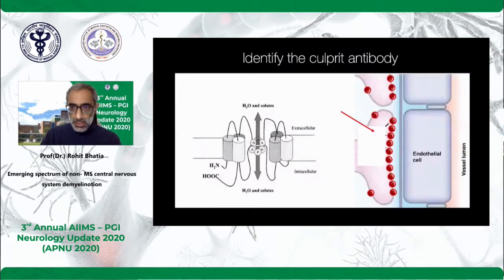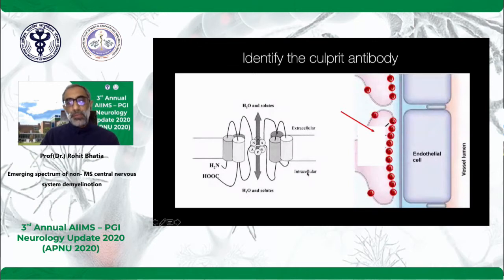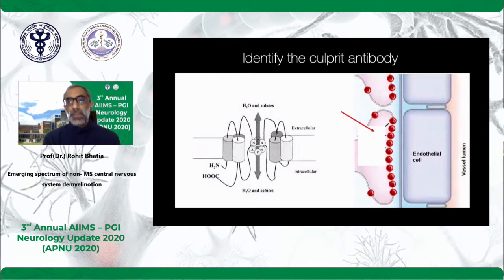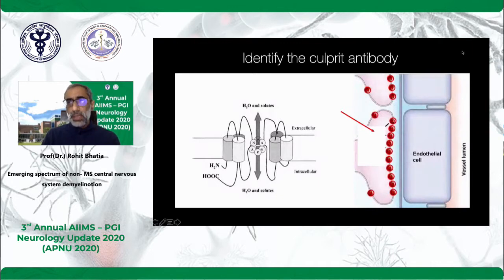This is a question for the students: I've made a diagram of a channel with red dots — if they can identify the culprit antibody, that will be good. Is there a way to look into the responses, or should I go ahead quickly?